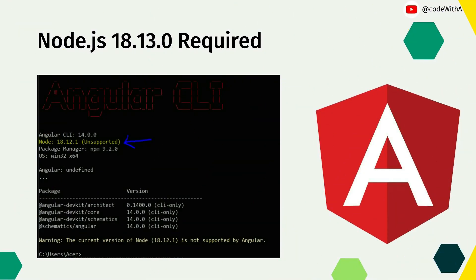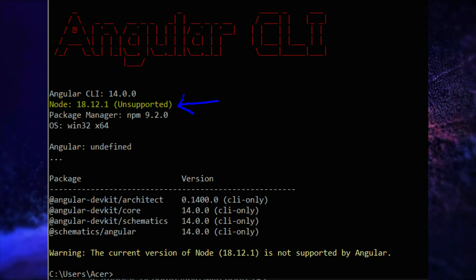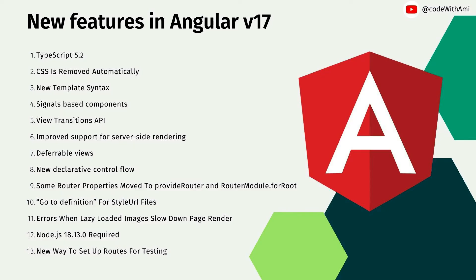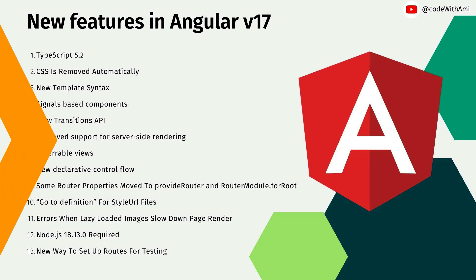Node.js 18.13.0 is now required. Angular tolerated Node.js version 16, but with Angular 17 you will have to update your Node.js — version 18.13.0 will be the minimum requirement. The release also comes with some documentation improvements, bug fixes, and deprecations, though we're not aware of all the deprecations yet.